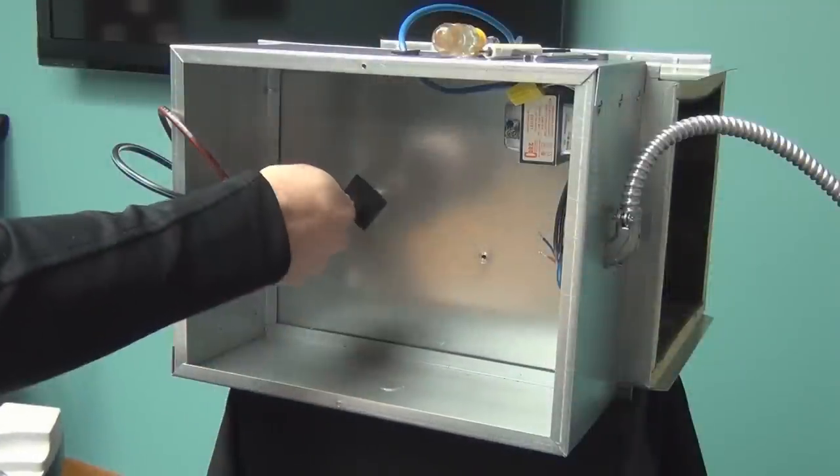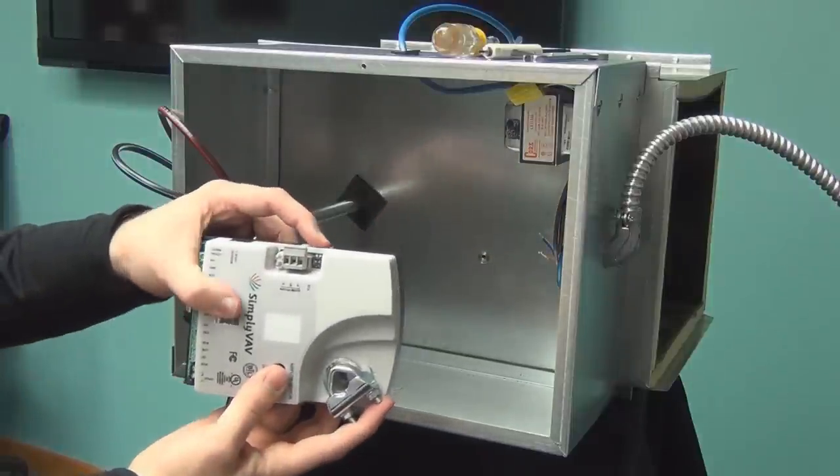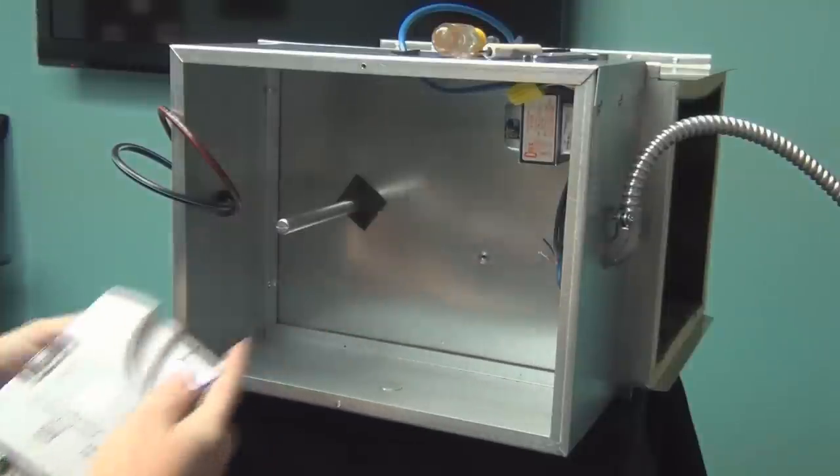First, manually position the damper in the fully open position. Next, depress the gear disengagement button and rotate the V-bolt in the same direction as the damper until the V-bolt is against a stop.